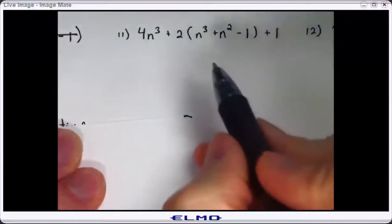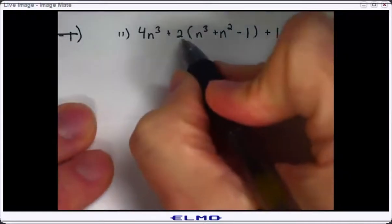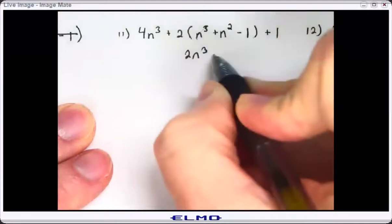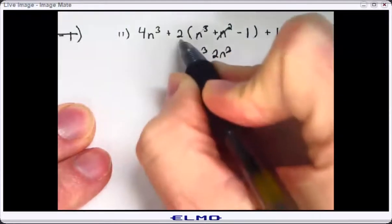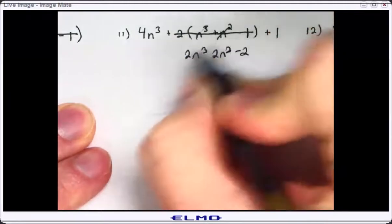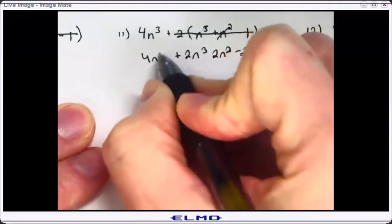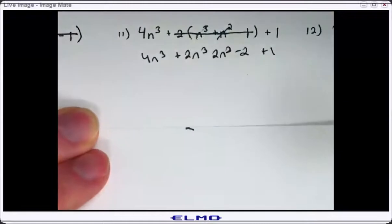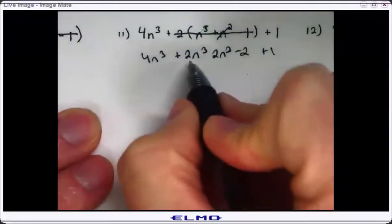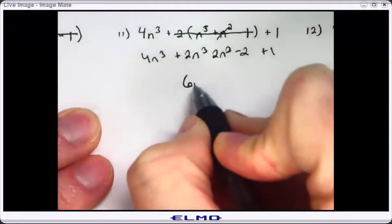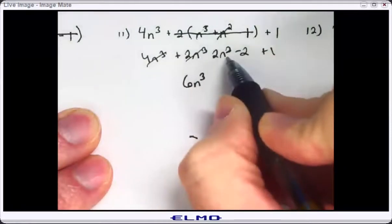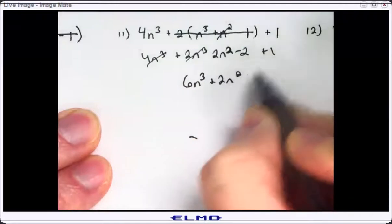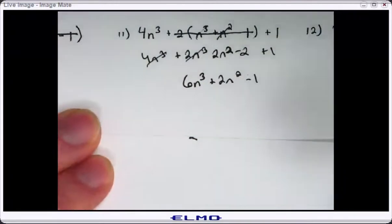Number eleven. Can I do what's inside the grouping? I cannot. So I distribute — two times n cubed is two n cubed, two times n squared is two n squared, and two times negative one is negative two. I could just bring these two terms down or imagine they're all in the same line. Like terms: I've got two cubes — four n cubed plus two n cubed is six n cubed. I only have one square — two n squared — so I'll bring it down. And I have two constants — negative two plus one is negative one. So your answer has three terms.